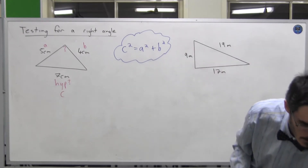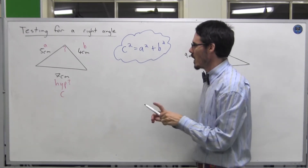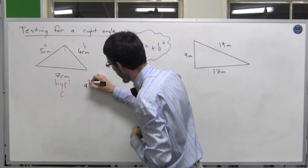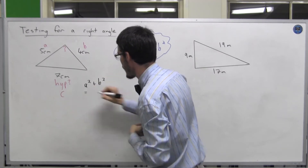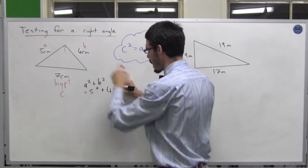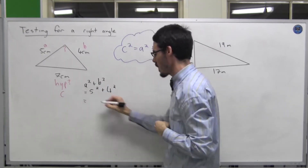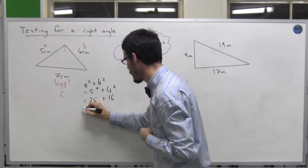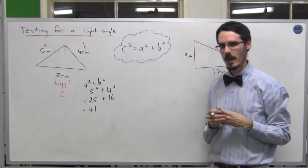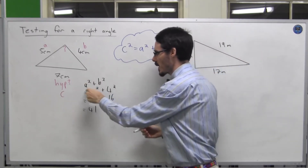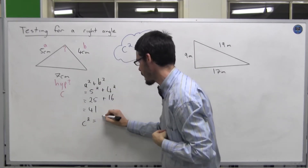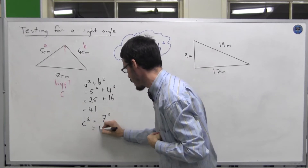So let's find out what happens. What is a squared plus b squared? That's going to be 5 squared plus 4 squared. That's 25 plus 16, which is 41. That's what a squared plus b squared would be. In this case, I've got c squared being 7 squared, or 49.